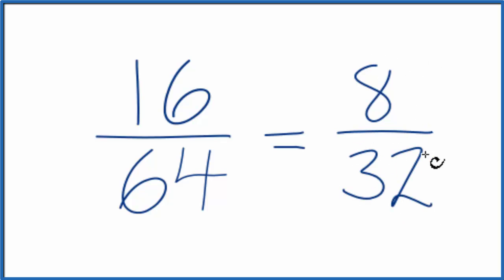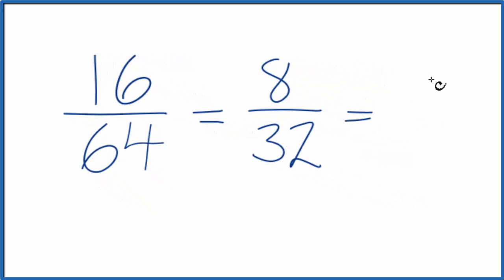This might be easier to work with. 8 goes into 32 four times. So we divide 8 by 8, that gives us 1, and we divide 32 by 8, we get 4. So again, we get 1 4th, the same answer.